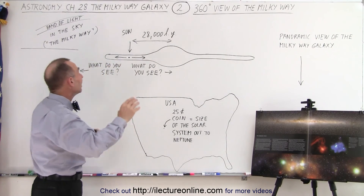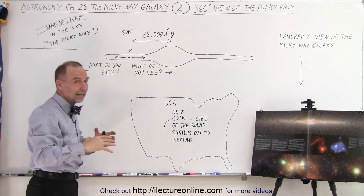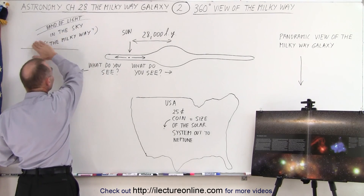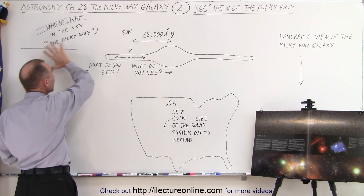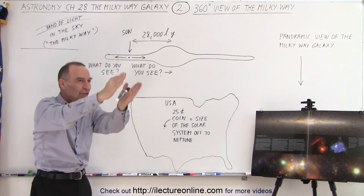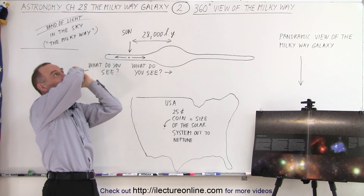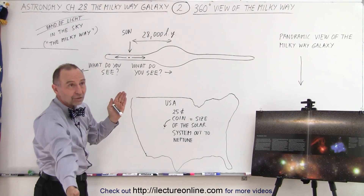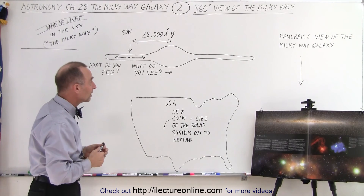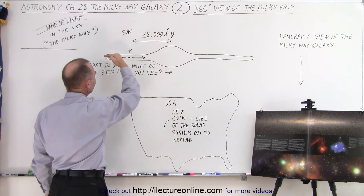When we look at the sky on a clear night — when there aren't too many city lights or a full moon — we see this band of light called the Milky Way. What we're actually doing is looking along the disk of the galaxy. The disk goes across the sky all the way around, 180 degrees, and from any point on Earth you can see the Milky Way disk.